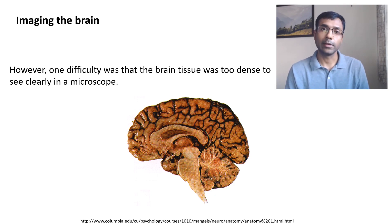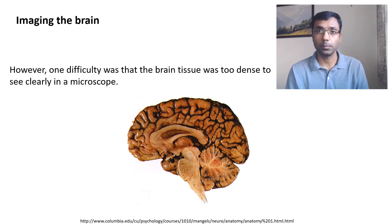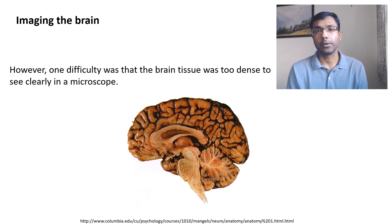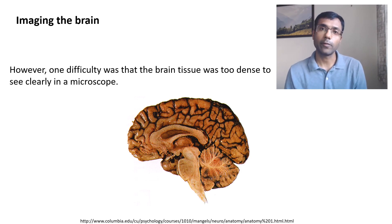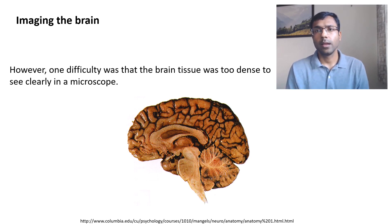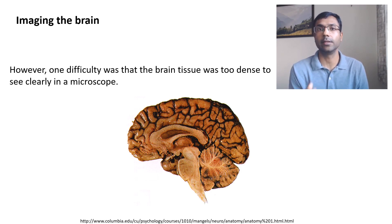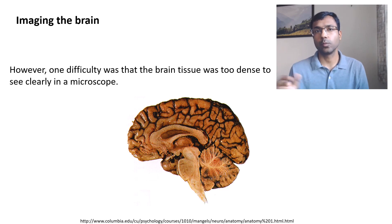The solution was not clear. Try to think: if you were living a hundred years ago and you had access to a microscope, what would you do to be able to see more detail in the brain? One idea could be to take thin slices out of the brain and try to look at them. But if your slice is a few microns thick, it might still be too dense to see anything clearly within an optical microscope. If you had access to an electron microscope you could go deeper, but that technology did not exist at the time.